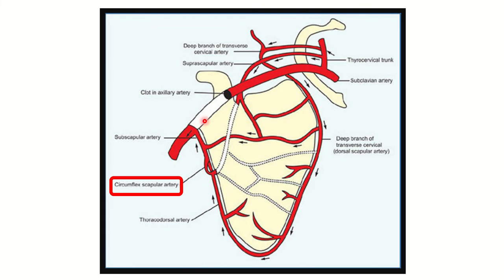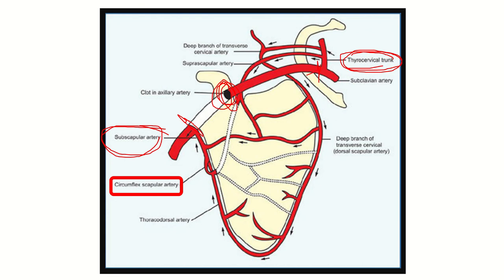Let's look at some pictures regarding this question. First, we can see the ligature point, which is located between the subscapular artery and the thyrocervical trunk. Here we can see the subscapular artery and here the thyrocervical trunk — the ligation occurs between these two points. This means anywhere in that segment of the axillary artery there is a ligation, and this pathway is completely blocked.